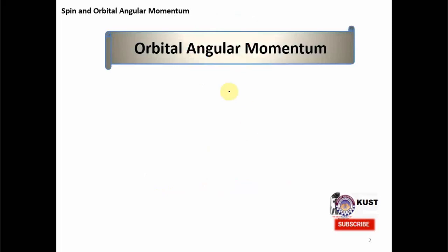Let's start with the orbital angular momentum. As you all know, orbital angular momentum L, which is a vector quantity, is equal to R cross MV, where MV is the linear momentum and R is the moment arm and also a position vector. Since velocity is a vector, this is the cross product of the moment arm and linear momentum, which gives us the angular momentum.